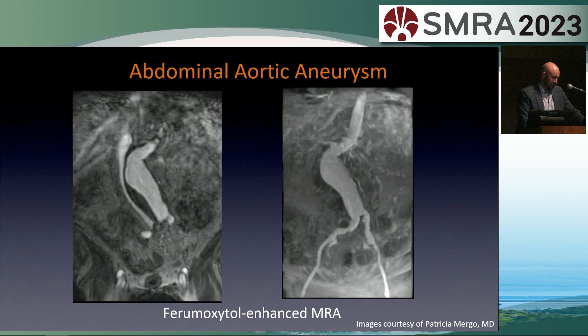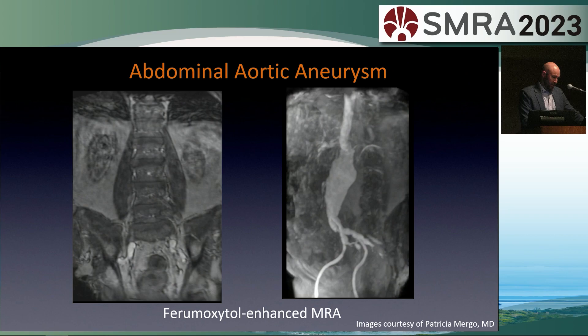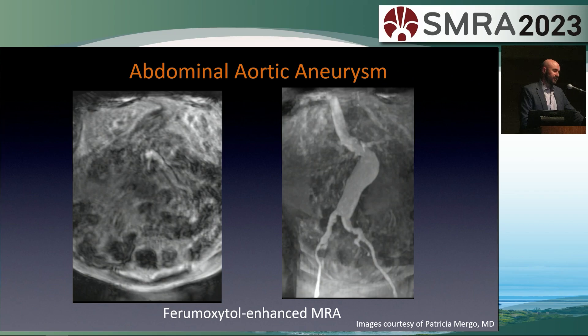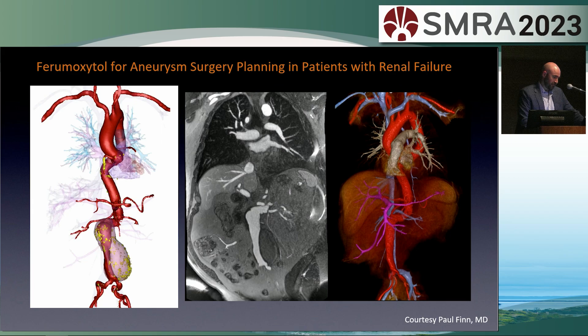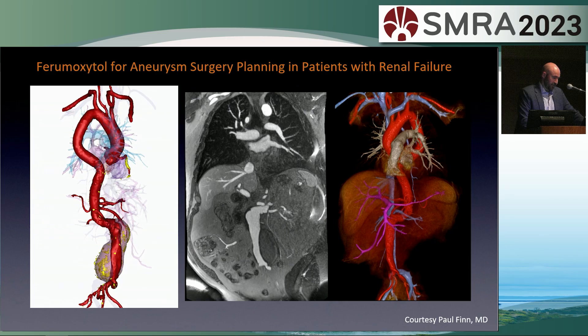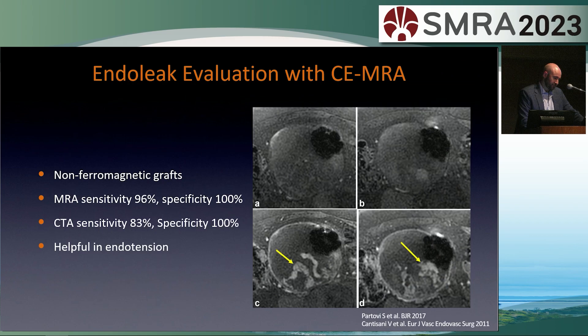Feraheme MRA is used frequently at Mayo Clinic when there are concerns with giving gadolinium-based contrast. We still use Feraheme for a few indications for artery evaluation alone. A case from the Florida practice shows nicely an infrarenal abdominal aortic aneurysm and mural thrombus with excellent image quality. First-pass imaging provides easy MIP images. A case from Paul Finn demonstrates steady-state Feramoxol MRA for pre-procedure planning in patients with renal failure, with fusion images showing calcification from non-contrast CT, allowing accurate aortic measurements.